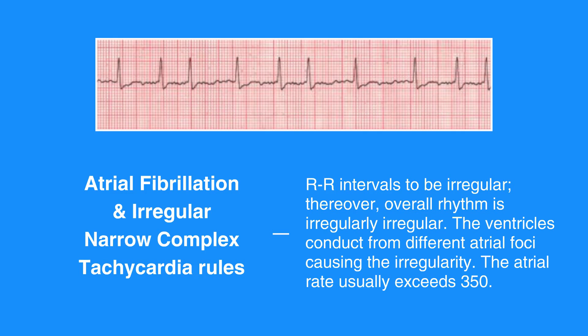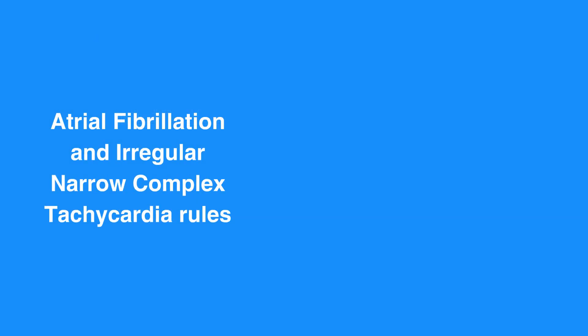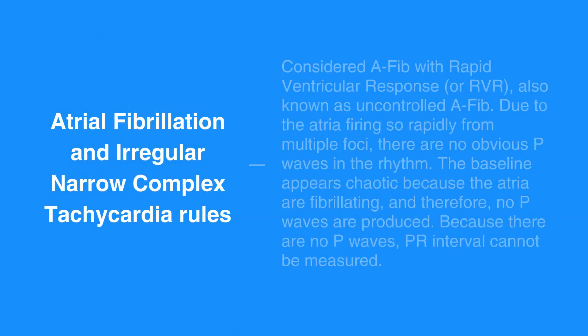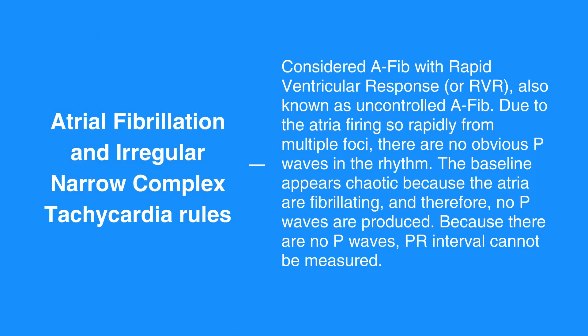If the ventricular rate is between 60 and 100 beats per minute, this is known as controlled AFib. If the ventricular rate is more than 100, it's considered AFib with rapid ventricular response, or RVR, also known as uncontrolled AFib.